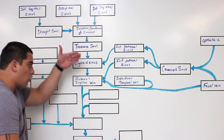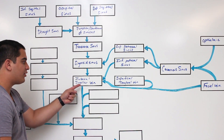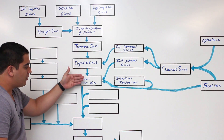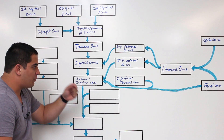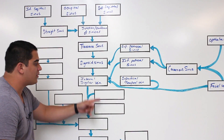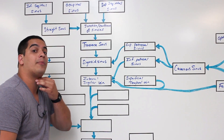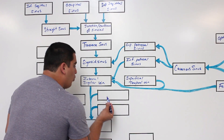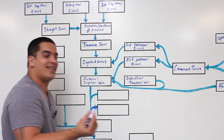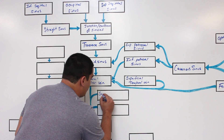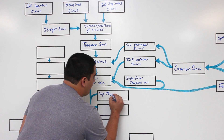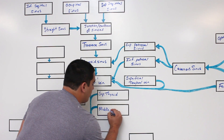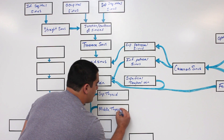As the internal jugular vein moves out through the jugular foramen and descends through the neck, it picks up blood from additional structures — including two veins from the thyroid gland: the superior thyroid vein and the middle thyroid vein.